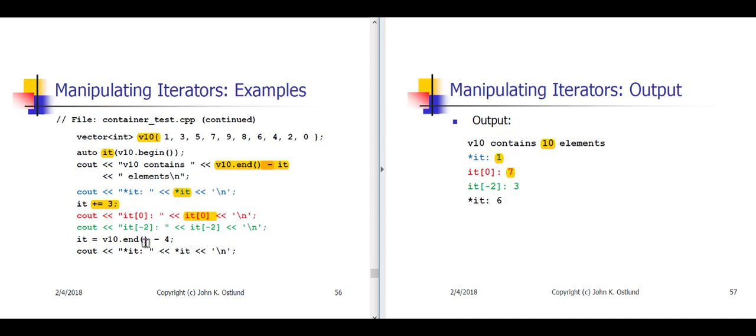I can use negative subscripts, just as I could if it were an array or a pointer. It sub minus 2 is the element that is 2 before the 7, which is going to be the 3. And if I set my iterator to the end minus 4, well, the end is going to be just beyond the 0. So minus 1, 2, 3, 4. The end minus 4 is going to be pointing at the 6.